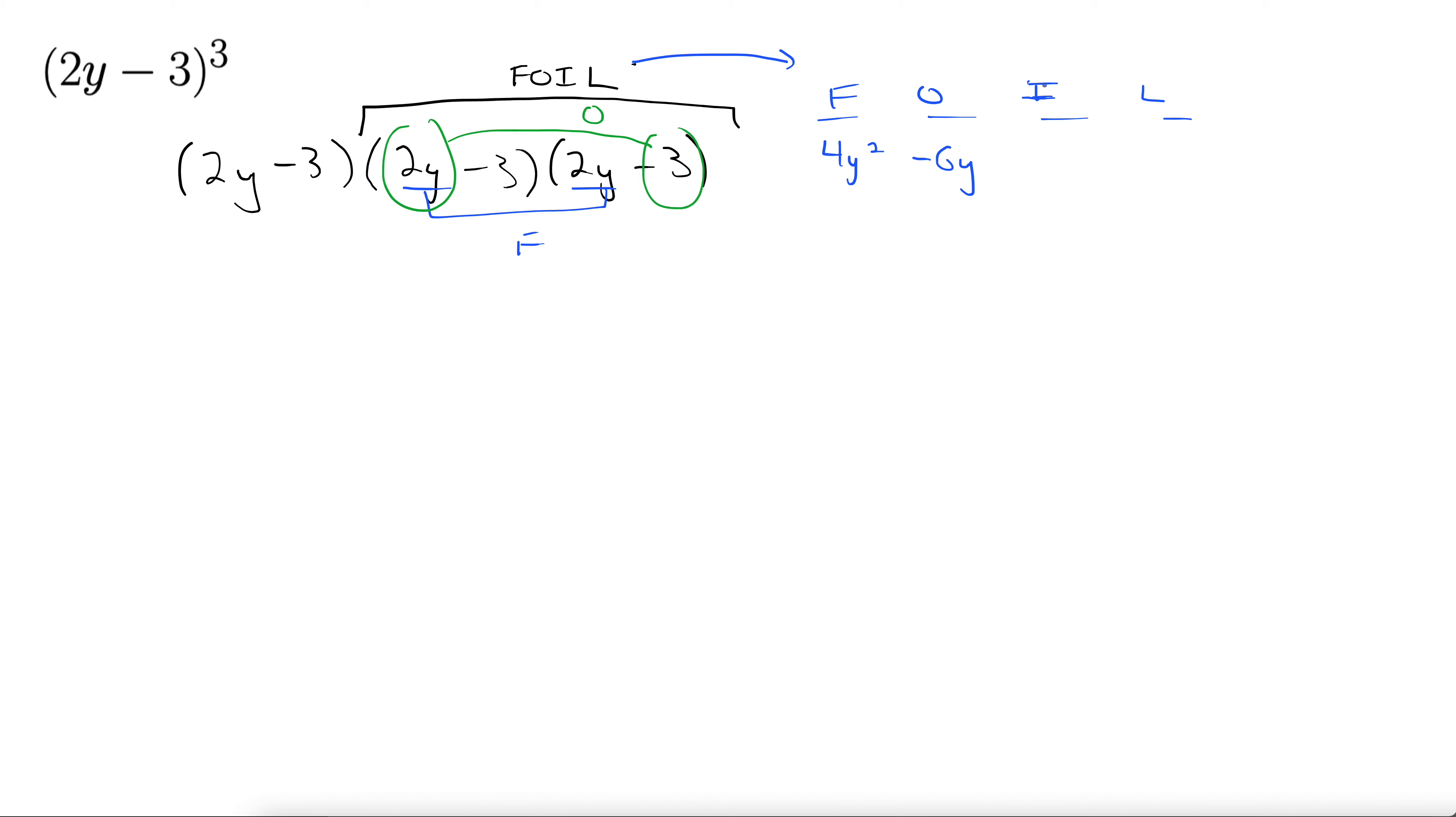For our inside, negative 3 times 2y. That makes our inside. Starts to get a little messy here. Minus 6y. Minus 6y again.